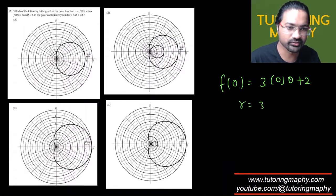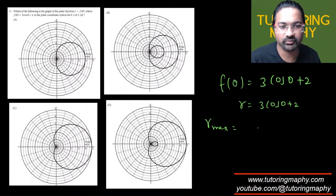The maximum value of r, because r = 3cos(θ) + 2, is going to be when cos is maximum. Cos is maximum when it is 1, so the maximum value will become 3(1) + 2 which is 5.